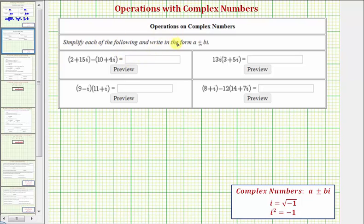We want to simplify each of the following and write in the form a plus or minus bi. In our first problem, we're subtracting two complex numbers, so what we'll do is clear the parentheses and combine like terms, treating the i like any other variable.